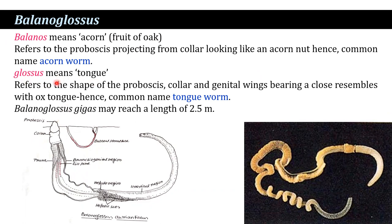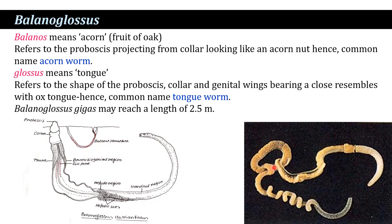The word 'glossus' means tongue, referring to the shape of the proboscis. The collar and genital wings are also present, and these closely resemble an ox tongue, hence the common name tongue worm. Balanoglossus gigas may reach up to a length of 2.5 meters.